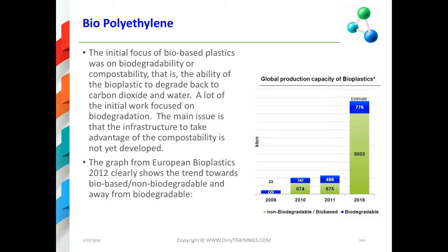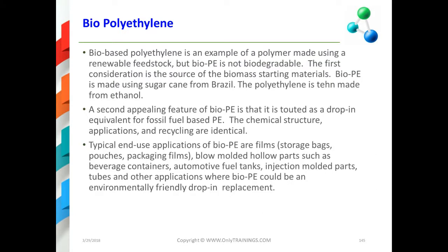In terms of innovations, the one gathering the most interest right now is bio-polyethylene. There are two ways materials can be green-friendly: they can be compostable, or they can be made from green materials. Bio-polyethylene is made from green materials — specifically, it's made from ethanol produced from sugarcane in Brazil, which is currently one of the major feedstocks.